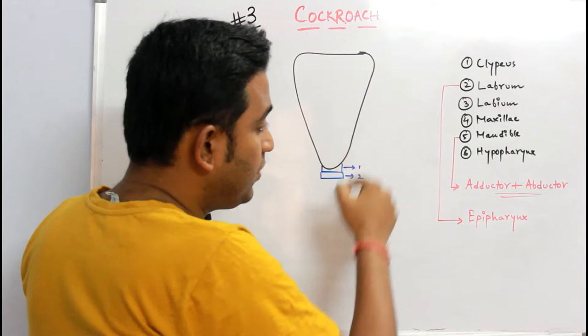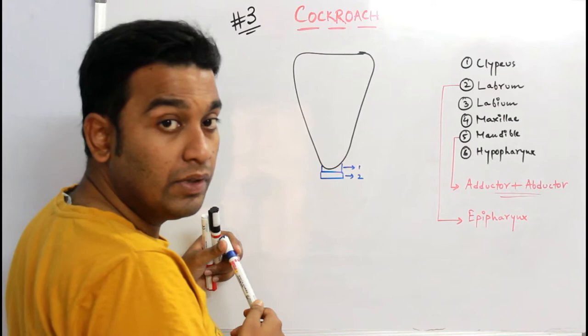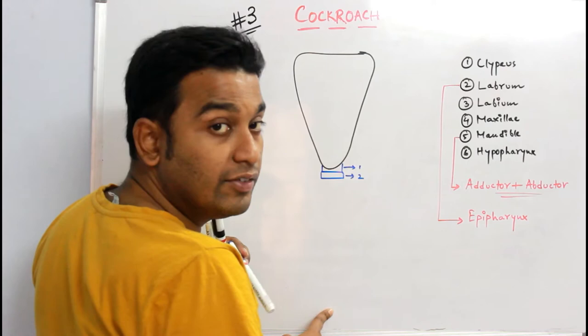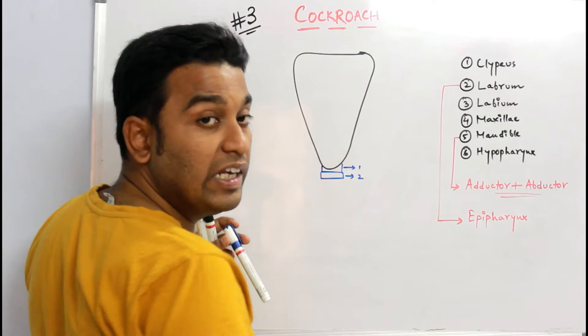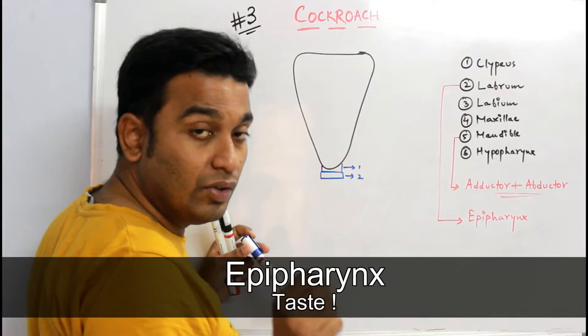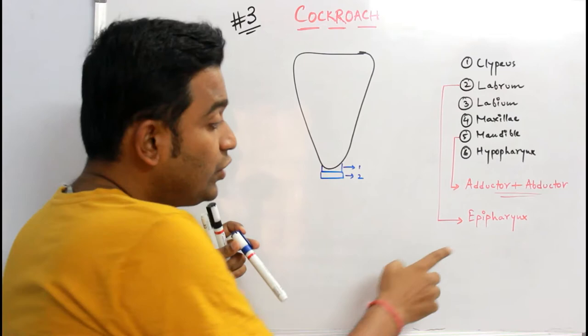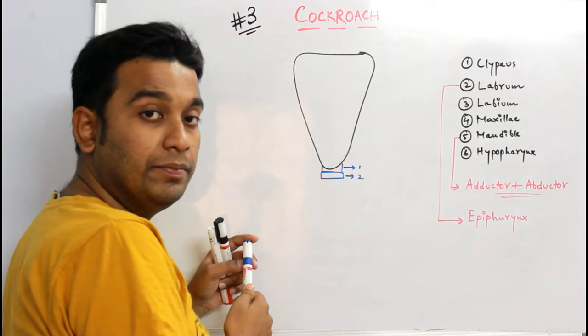Now to the inner surface of the labrum, there is a presence of some special structure which is known as the epipharynx. This is the structure which is associated with the labrum which will help in perceiving the taste. So as far as tasting food for a cockroach is concerned, you have this epipharynx which is present to the inner surface of the labrum.